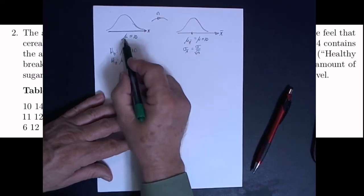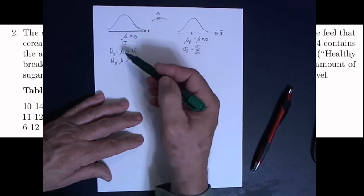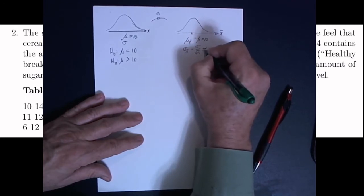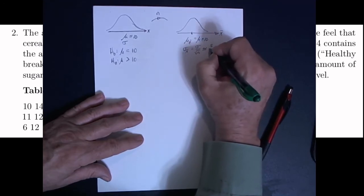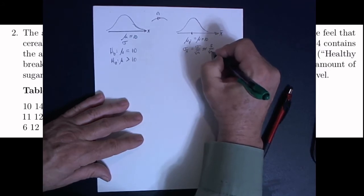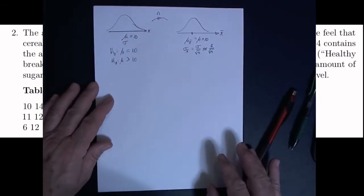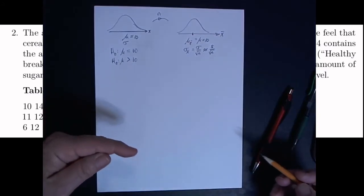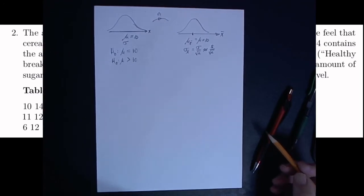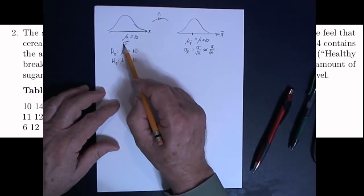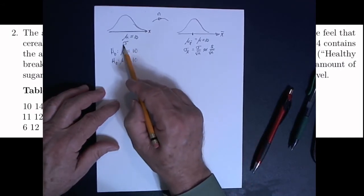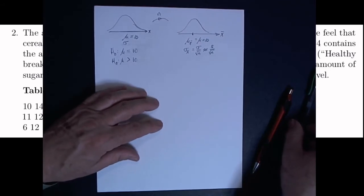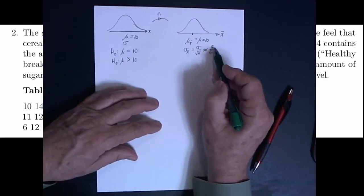Our problem is that we don't know the population standard deviation, and that's often the case. So what we're going to do is approximate that value with the standard deviation of the sample divided by the square root of n. If the population standard deviation is known, you'll use a z-distribution. If it's unknown and we're using this approximation, then we will use a t-distribution to adjust for that approximation.